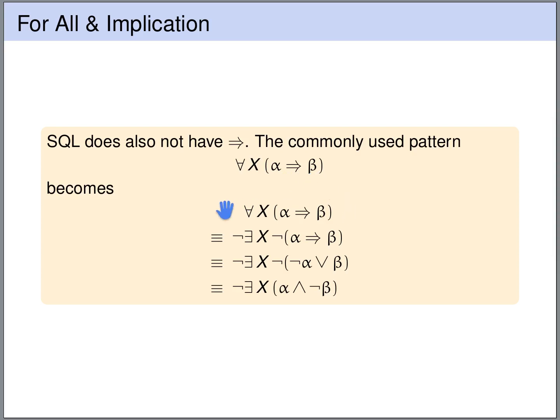First we are translating the for all quantifier into an existential quantifier. So we replace the for all x by not exists x, not. Next we have to express the implication using negation, and, and or. When is the implication true? The implication is true if the premise is false or the conclusion is true. So we can replace this implication by saying not alpha or beta.